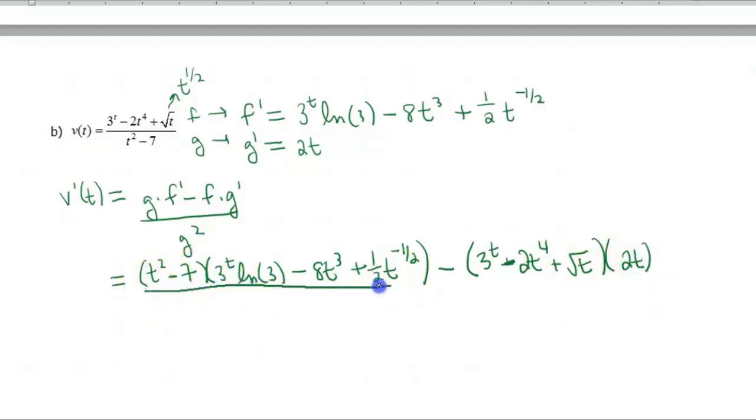And all of this junk is divided by the original denominator, t^2 minus 7 squared. And that is your answer. Now, again, depending on what your instructor expects out of you, you may have to multiply some of this stuff out, but that's algebra. I'll leave that one to the listener. Thank you for watching.